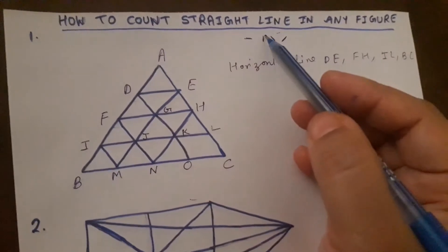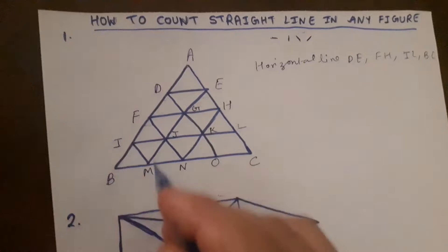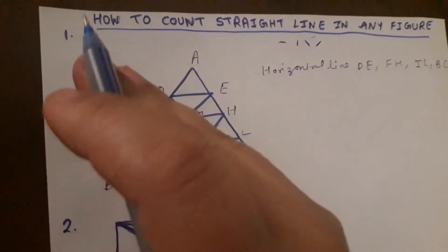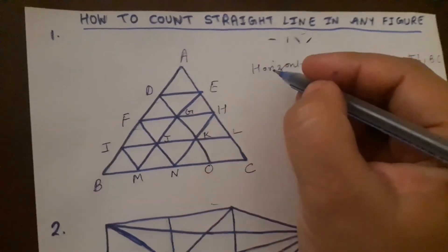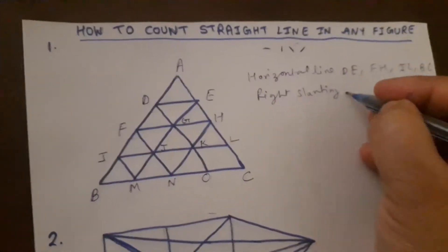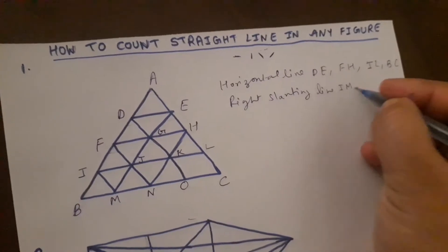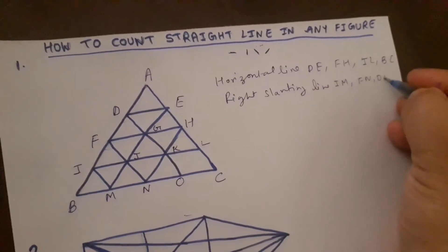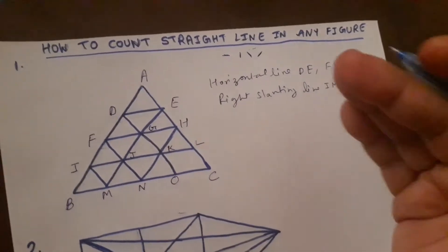After horizontal we have to count the vertical lines. In this figure you can see there is no vertical line — no vertical lines are there. Then we will move to right slanting lines. Right slanting line is like this. If you count the right slanting lines: I M, F N, D O, and A C. There are 4 right slanting lines.